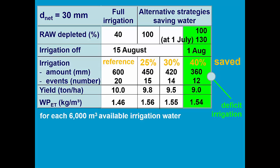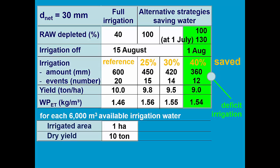If there is sufficient land available for irrigation, we can also express deficit irrigation in another way. For each 6000 cubic meters of water available for irrigation, with full irrigation, we can irrigate 1 hectare, and the yield will be then 10 tons.